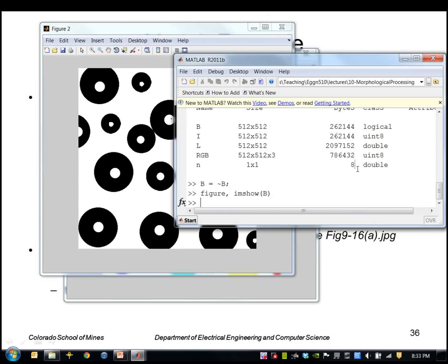So doing the same thing here, applying bwlabel to the new B to get a new label image and count. So I've got 19 regions.